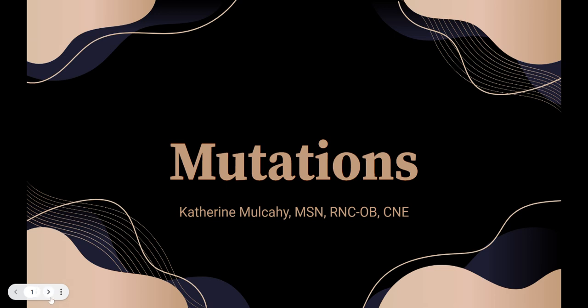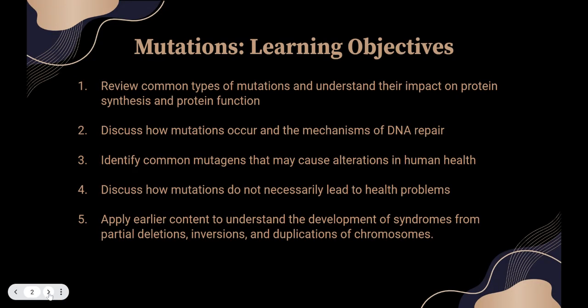These changes are called mutations. Our learning objectives: we're going to review common types of mutations and understand their impact on protein synthesis and protein function. We'll discuss how mutations occur and the mechanisms of DNA repair. We'll identify common mutagens that can cause alterations in human health. We'll discuss how these mutations don't necessarily lead to health problems and apply the earlier content to understand how syndromes develop from bigger chunks of DNA change.